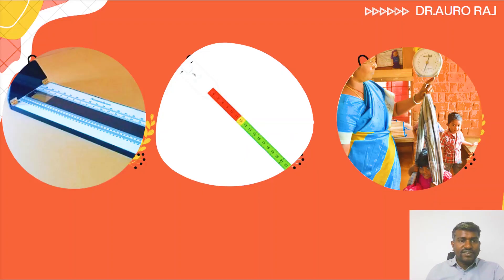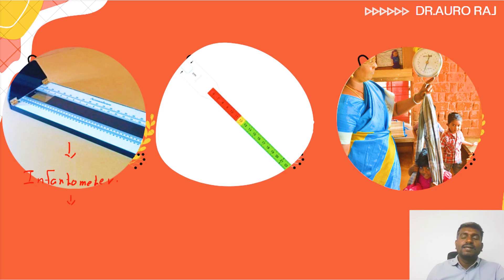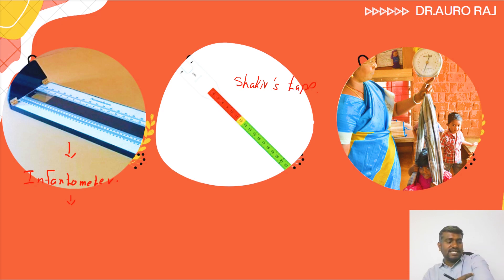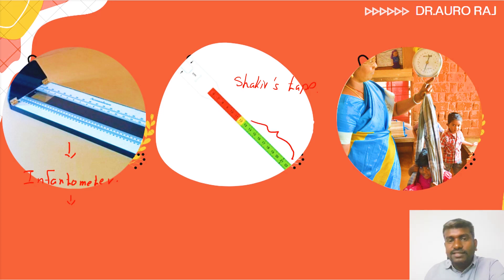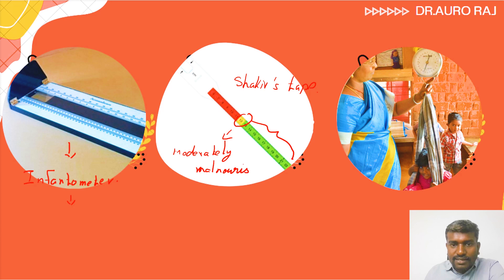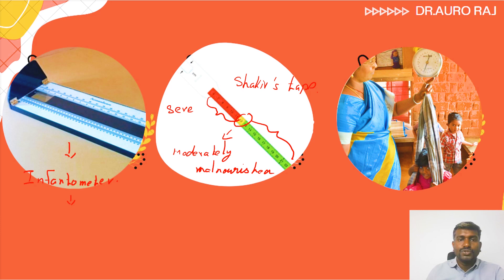Now look at these three images. The first image is going to be the infantometer, used to measure infants of one year of age. This tape is a very important tape called Shakir's tape. You tie this tape on the mid-arm of the child to measure it. If it is above 13, the child is healthy. If it comes to 12, the child is moderately malnourished. And if it shows red color, the value is less than 12, meaning the child is severely malnourished.